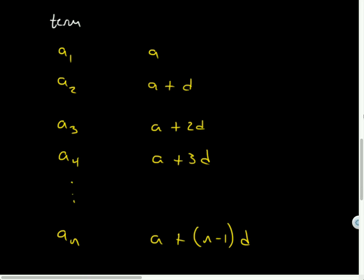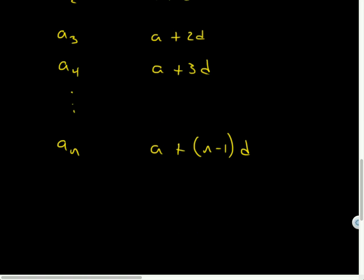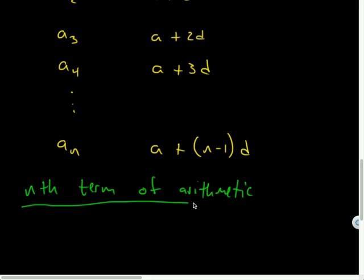So our formula, we just kind of discovered it from this pattern. So the nth term of an arithmetic sequence is a sub n equals a, you could refer to that as a sub one if you wanted, plus n minus one times d. So the first term plus some number of d's where it is one less than the number of terms I'm looking for.